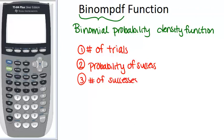So for example, say you flipped a coin 100 times, and you want to know what's the probability that you will get exactly 40 heads. You could use the binomial probability density function to help you figure this out.